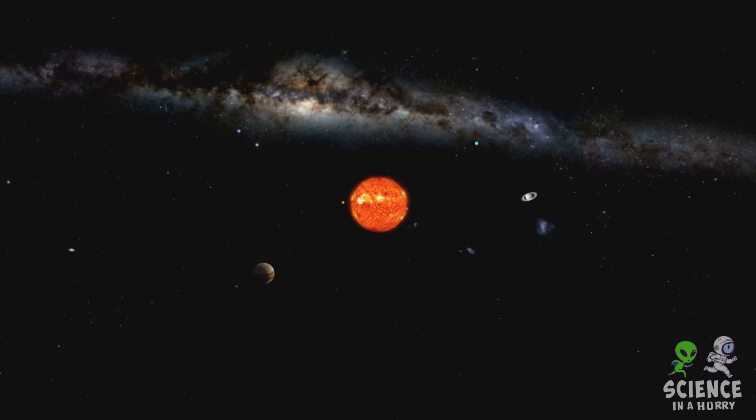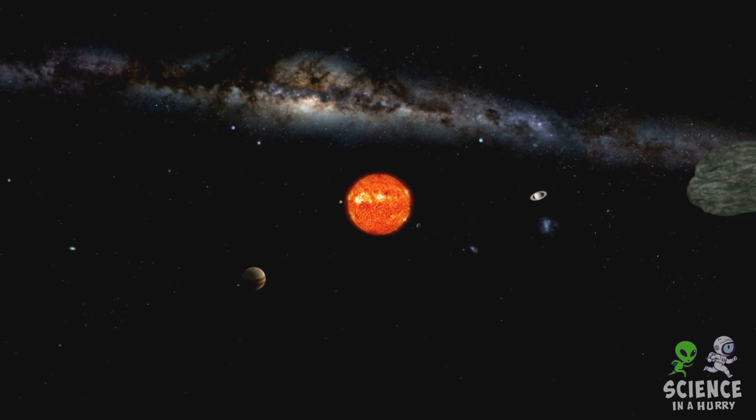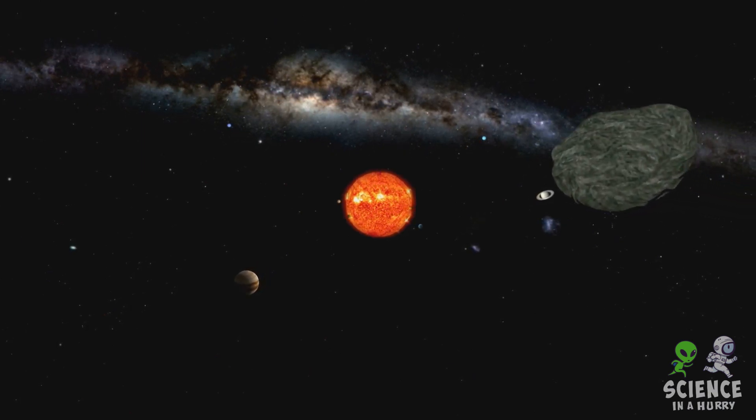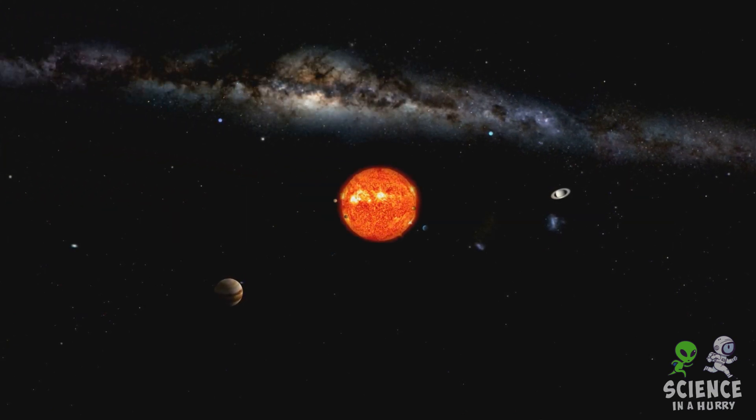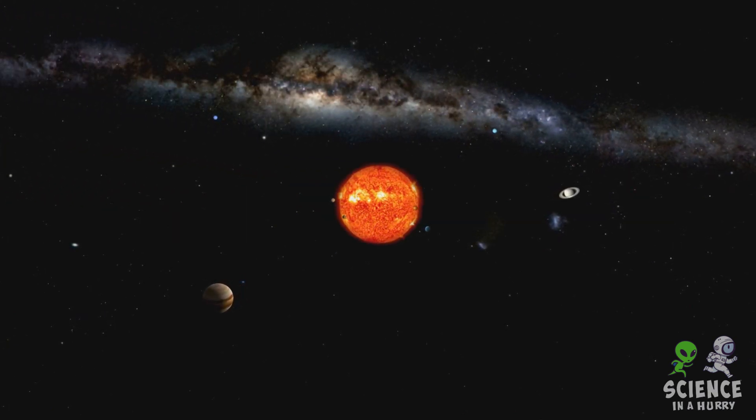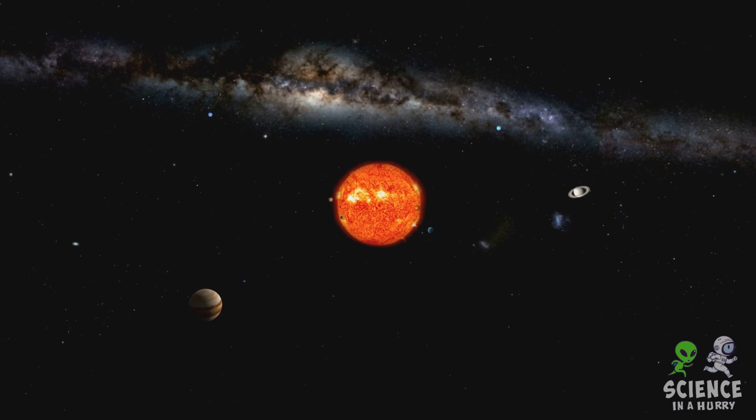The formation of a solar system is a journey from chaos to order, a process that takes millions of years and involves a complex interplay of gravitational forces, nuclear fusion and celestial dynamics.